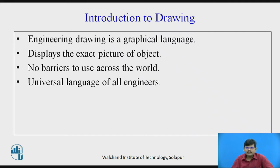A horn symbol with a slash over it clearly indicates that blowing a horn is not permitted in this area. A diagram of a mobile with a slash over it indicates that use of mobiles is prohibited. So across the world, drawings can be used to convey ideas — it is a universal language of all engineers. As we have certain standards, rules, and principles on the basis of which we make drawings.